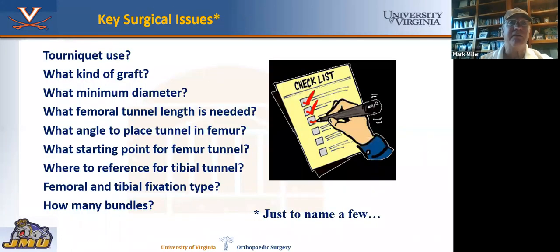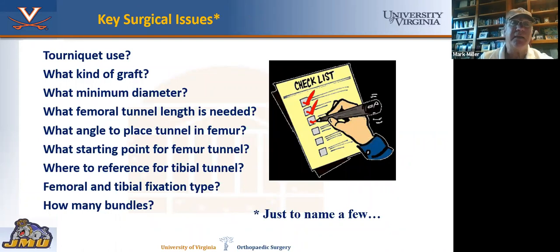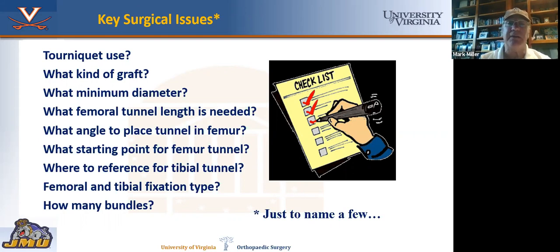There are several questions in ACL surgery: tourniquet use, what kind of graft, what's the minimum size, how much tunnel length, what angle you place things, where do you reference the different tunnels, how do you fix it, and how many bundles — just to name a few. We'll go through some of these.